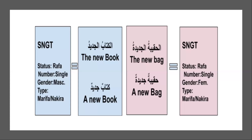So this is masuf sifah, because all four properties are matching. Now haqibatun jadidatun — un, un — again rafa, singular, both singular, and with ta marbuta both are feminine. But because al- is not there and there is tanwin in both of these words, both are nakira. So this is a new bag, and with al- it is the new bag.